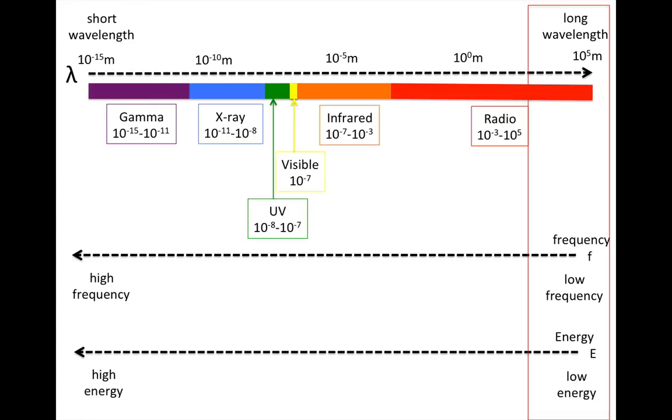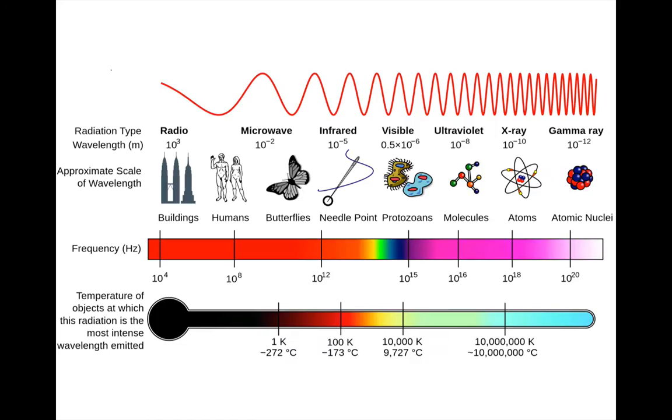Radio waves are the longest wavelength, lowest frequency, and lowest energy kind of light. And gamma rays are the shortest wavelength, highest frequency, and highest energy kind of light. Because X-rays and gamma rays are high energy light, they tend to be given off by high energy astrophysical processes. And because temperature is related to energy, high temperature objects give off lots of high energy light, and low temperature objects give off lots of low energy light.